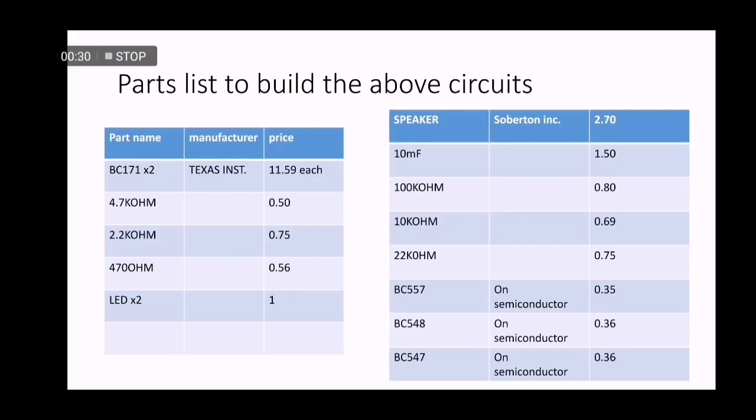Let's look at the part list for both. The circuit on your left is using two BC171 BJTs, 4.7 kilo ohm, 2.2 kilo ohm, and 470 ohm resistors, as well as two LEDs. Total price comes up at least around $13.